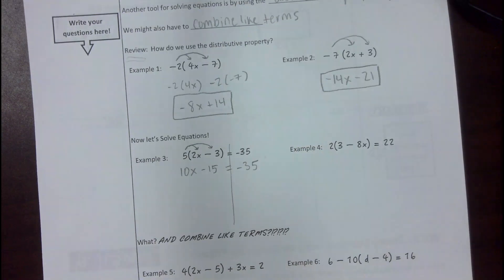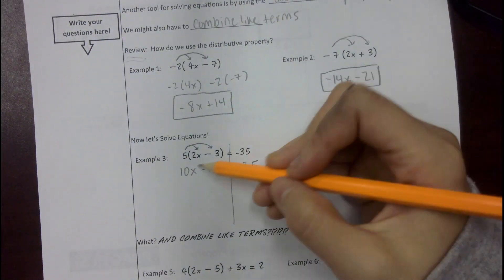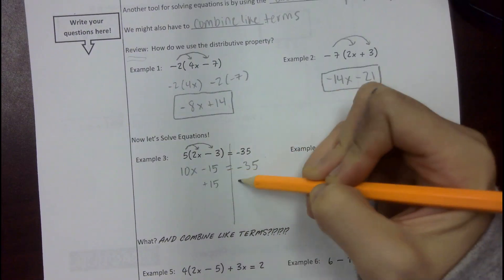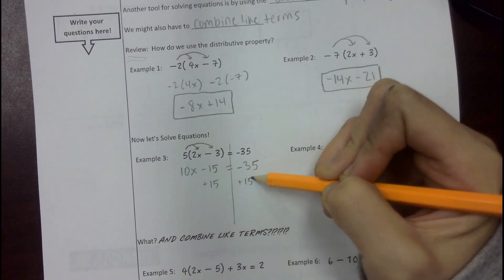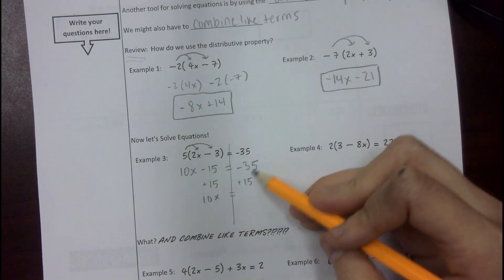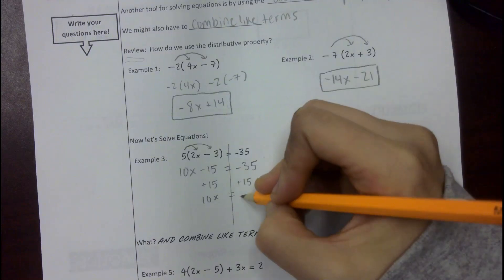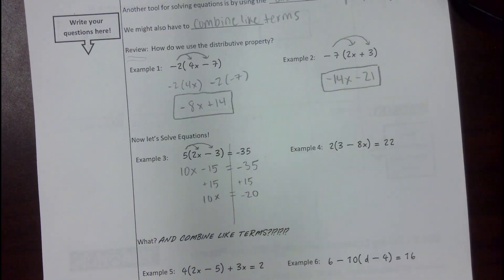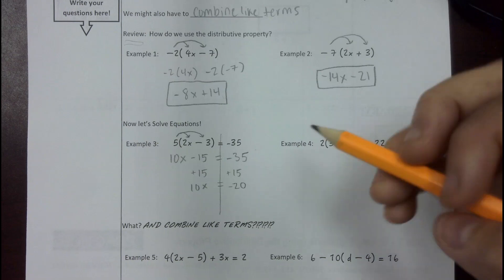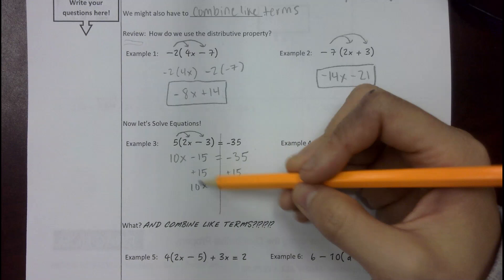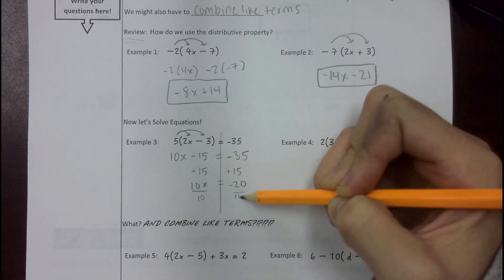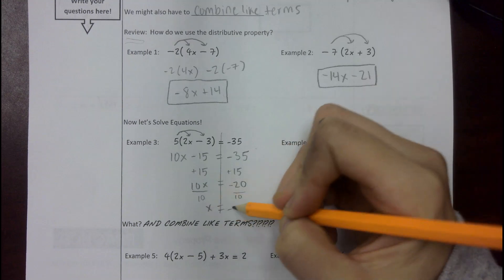Now we go back to our two-step equations. We're trying to get x by itself, so we're going to add 15 on both sides. We have 10x on the left side, and then negative 35 plus 15 gives you negative 20. You can use a calculator for this if you need to. We're going to divide by 10 and we get x equals negative 2.